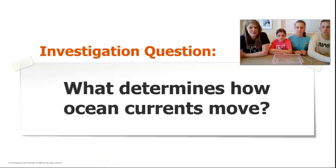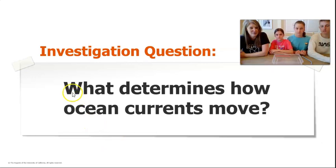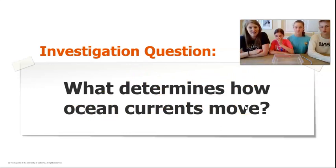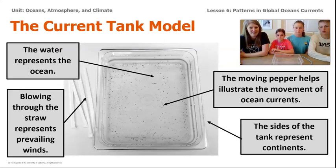Scientists use models to learn about the things they can't observe directly. We're going to use this model to learn about prevailing winds. The question we're trying to answer is: what determines how ocean currents move? You read an article about ocean currents and the Gulf Stream, and you did an exploration on the sim. So this is a chance to do an exploration in real life. Today we're going to be modeling how the prevailing winds around the earth influence the currents of the ocean.